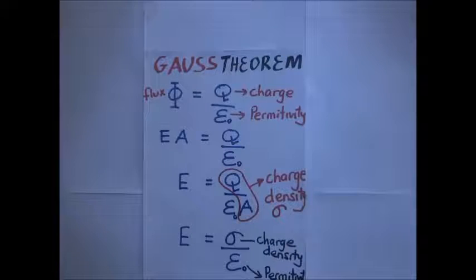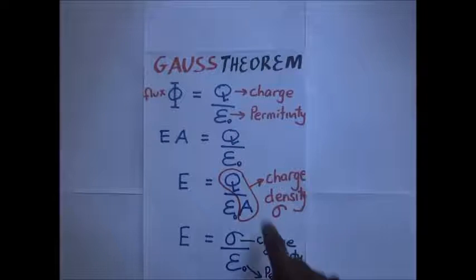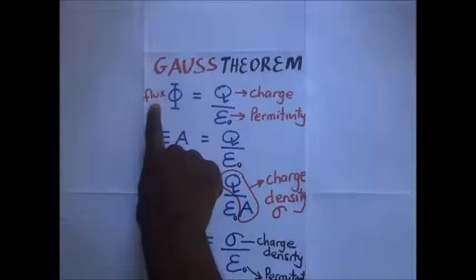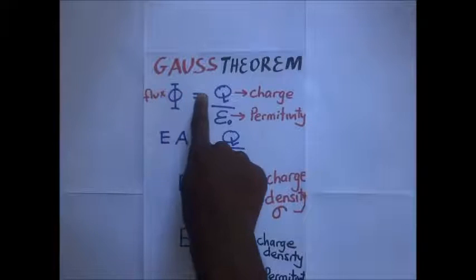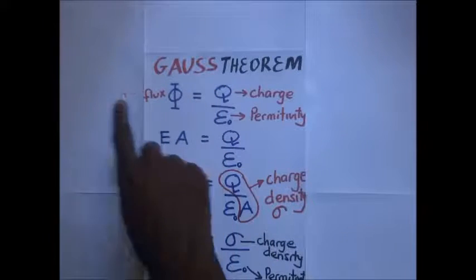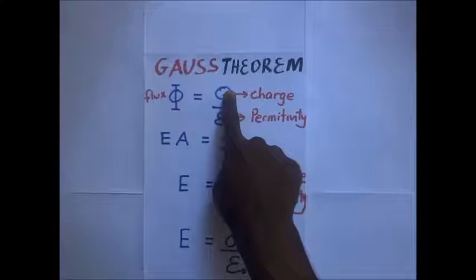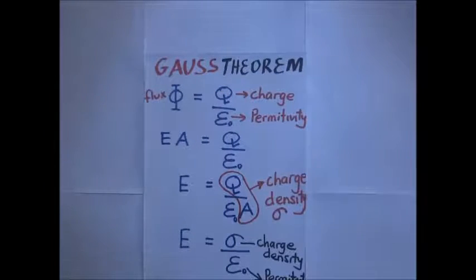Gauss's theorem simply states that the total flux passing normally through any closed surface, whatever its shape, is always equal to Q over E, where Q is the total charge and E is the permittivity.